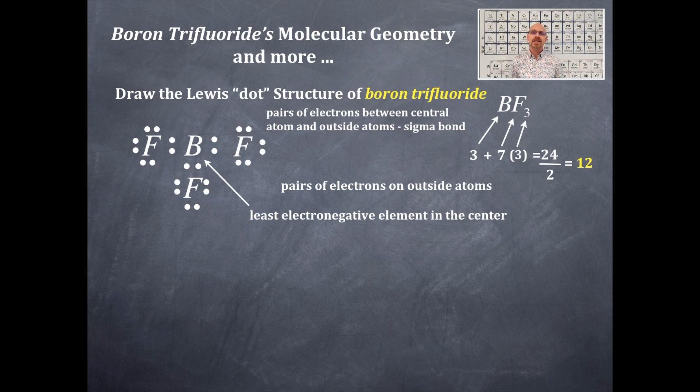You cannot use more, you cannot use less. You have to use those 12 pairs of electrons no matter what. Now I'm gonna check for the octet rule here for fluorine.